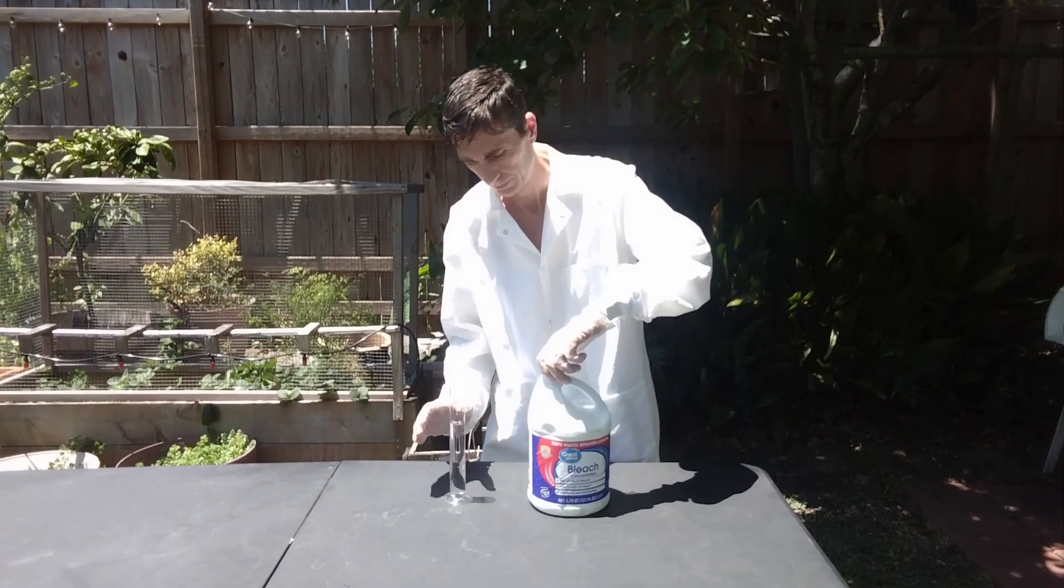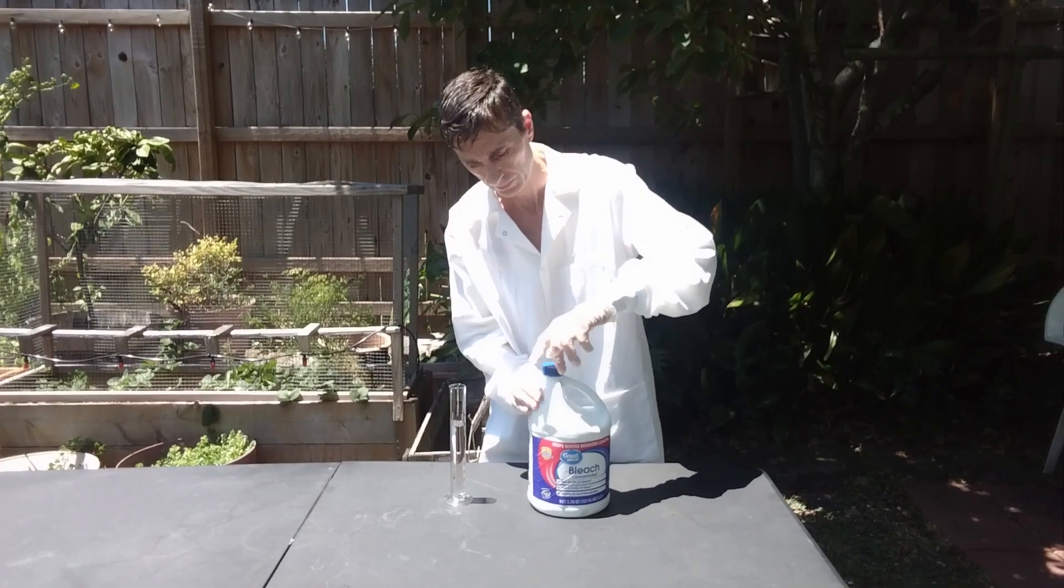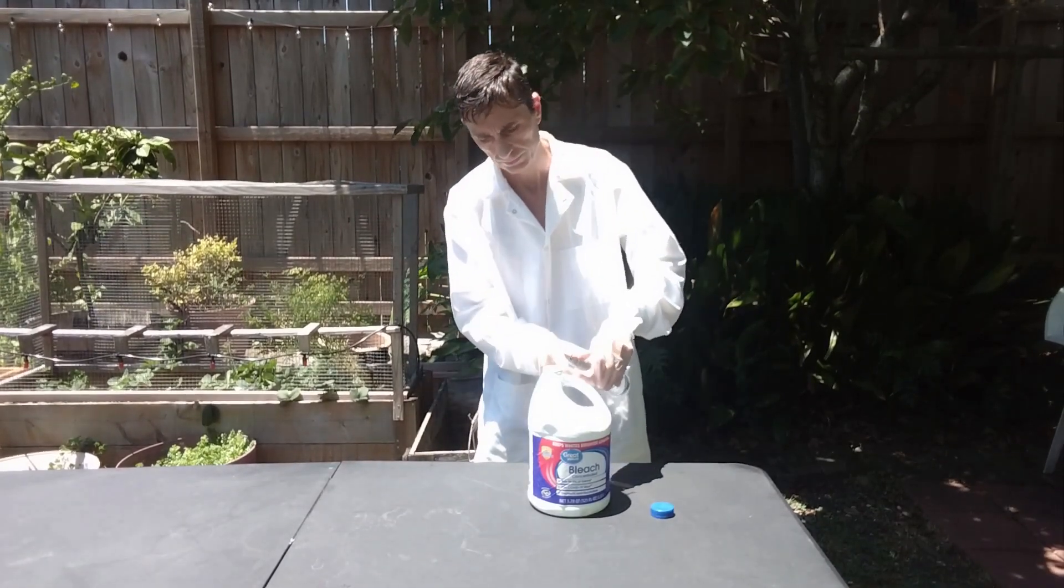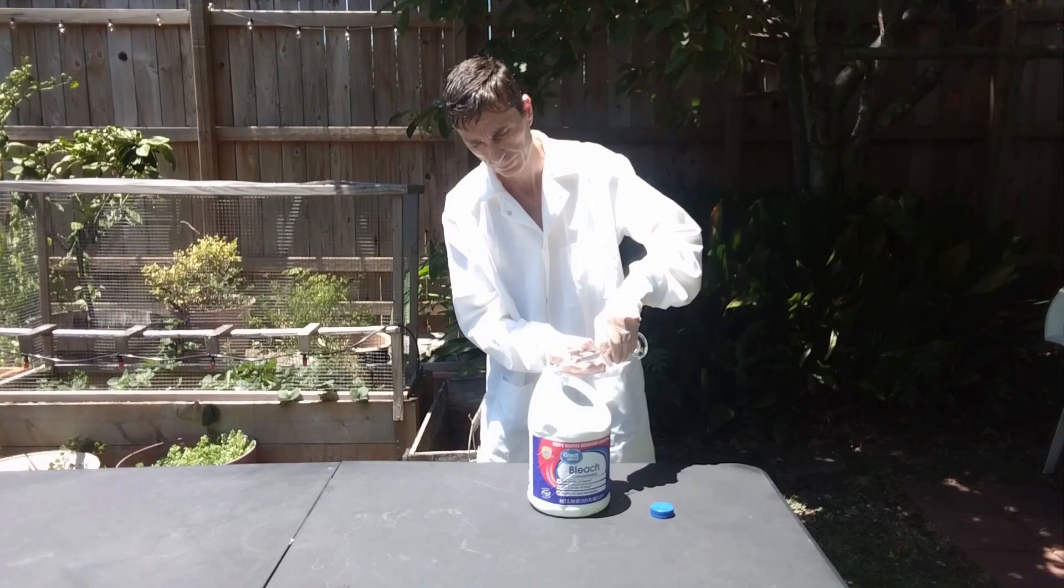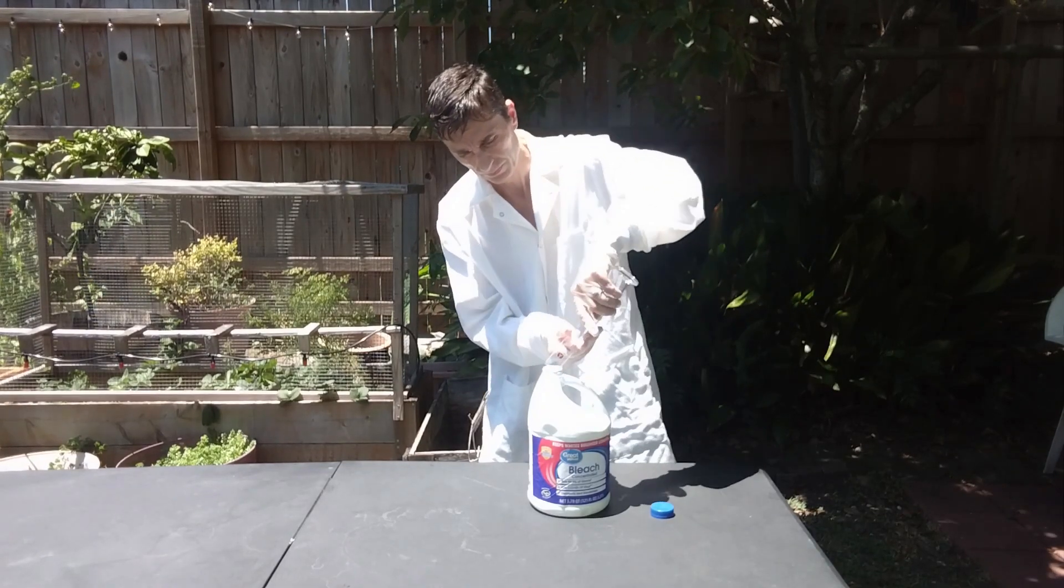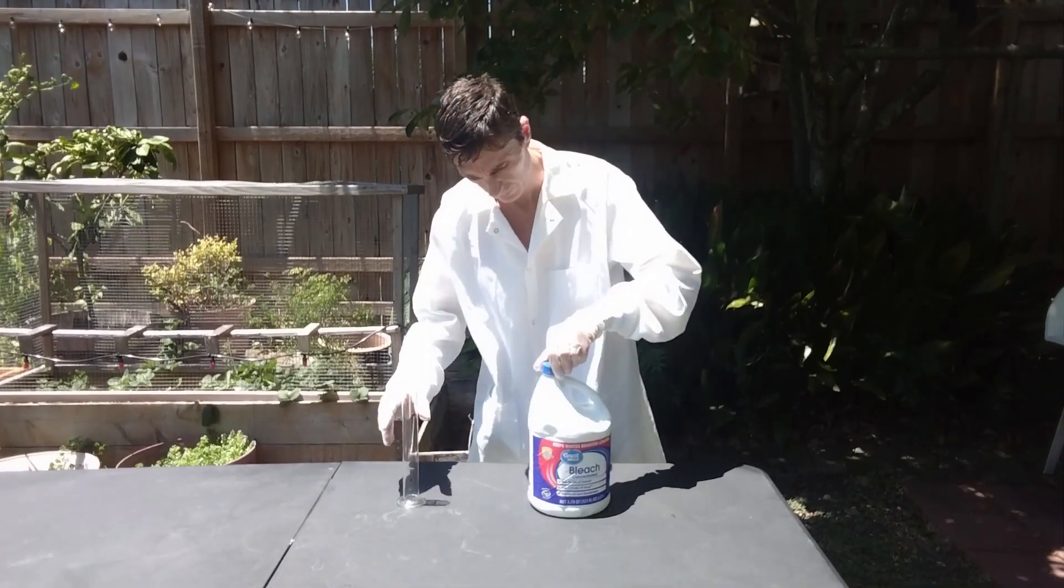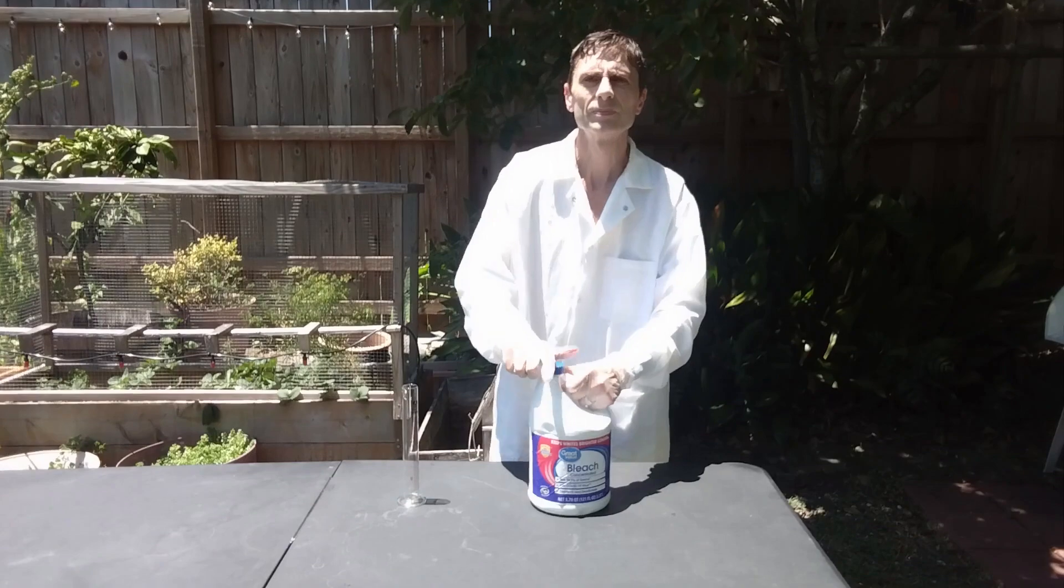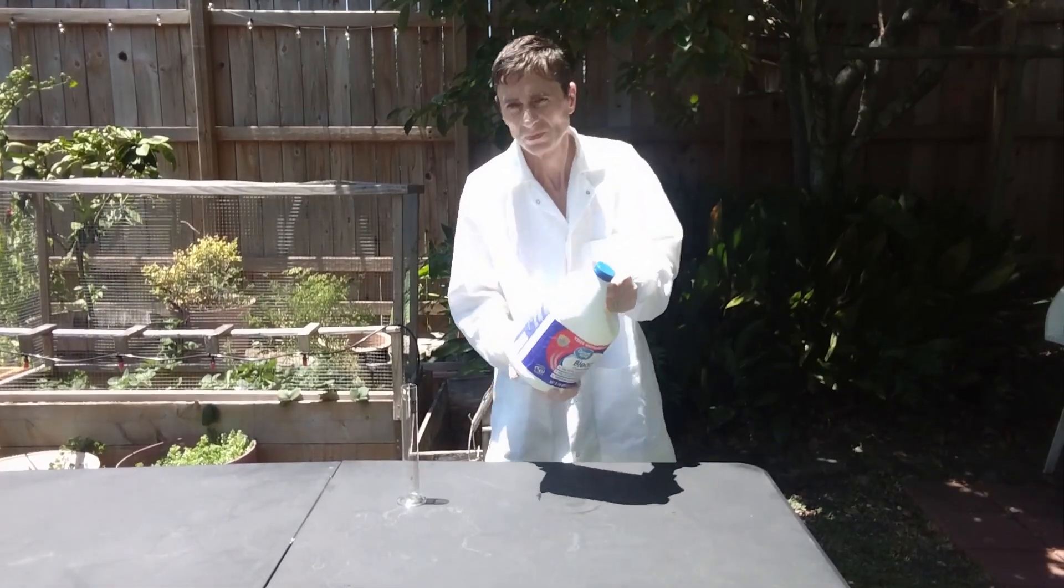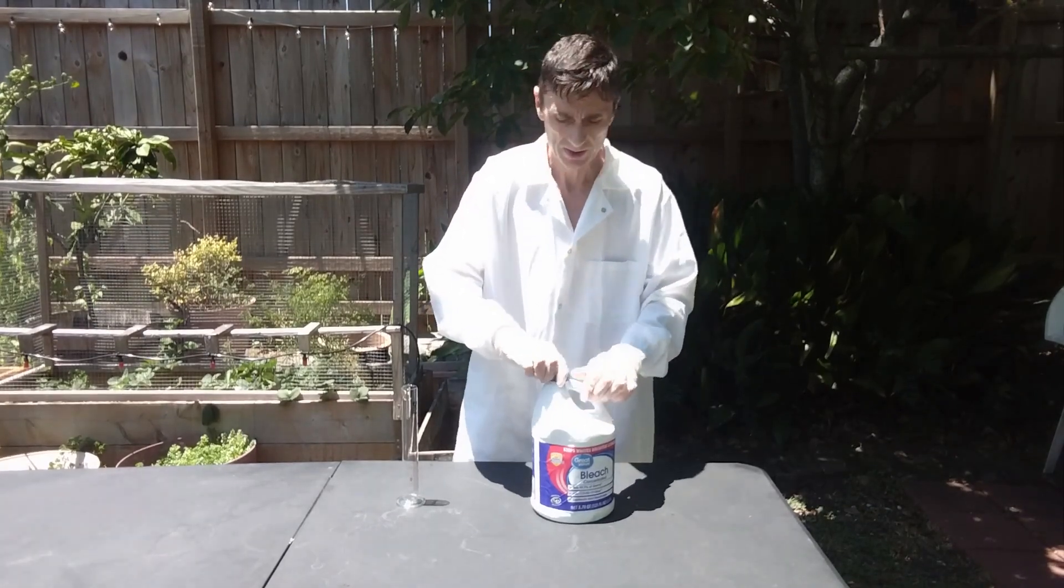Next, I'm going to add 90 mls of acetone. We're going to see in a moment where this number comes from. Close the container. Shake a little bit and release the cap in order to prevent pressure from building up.